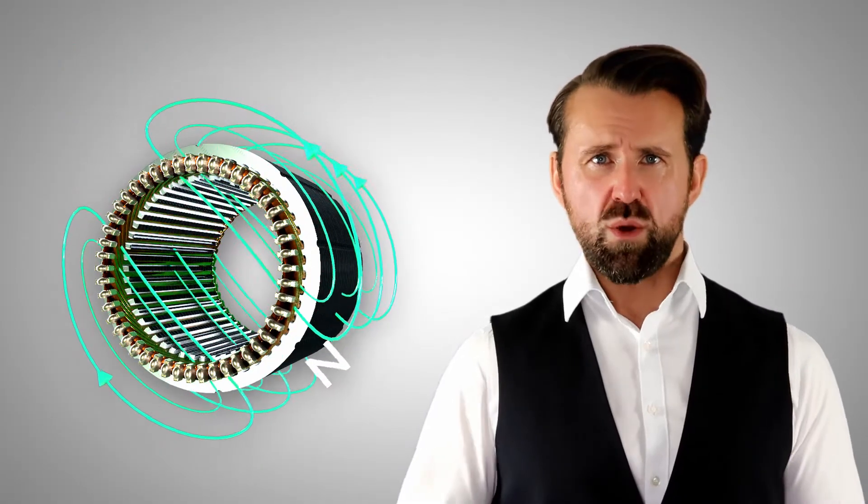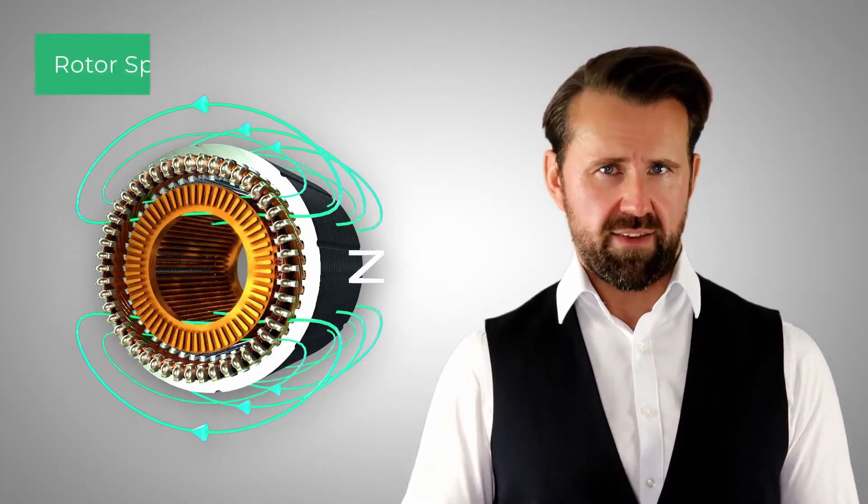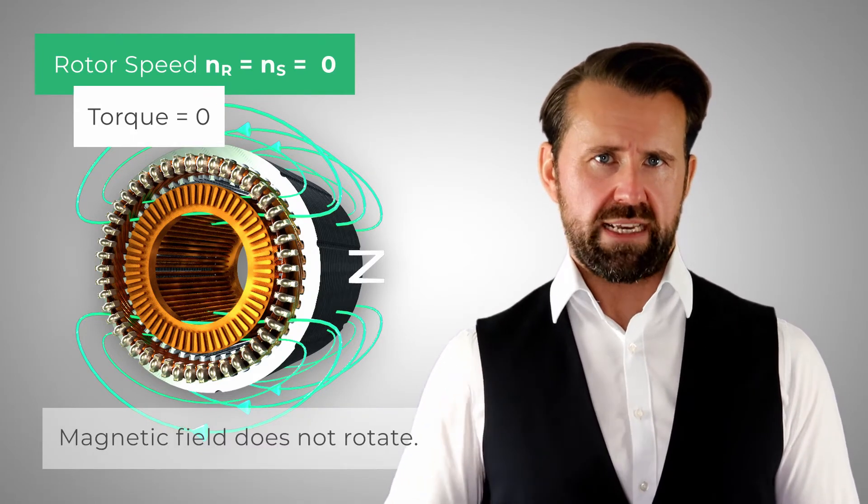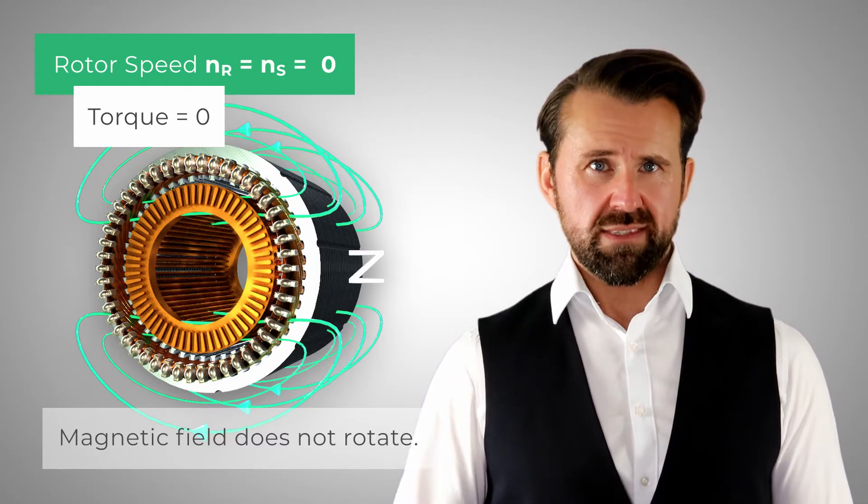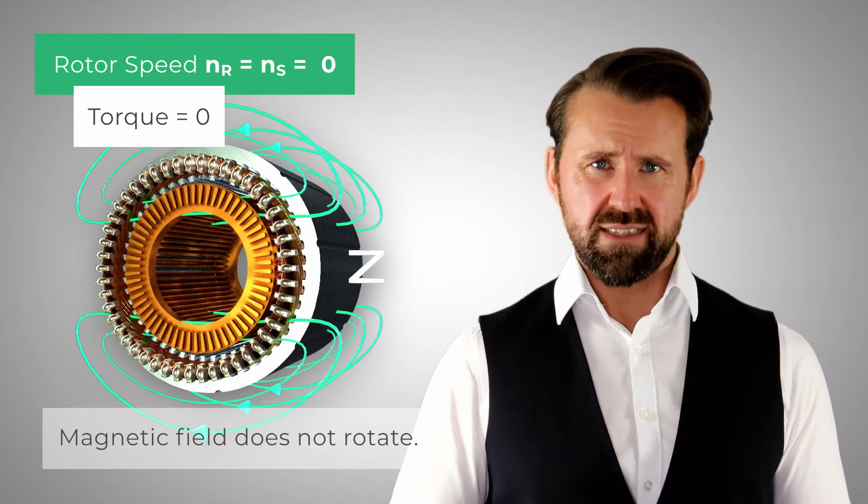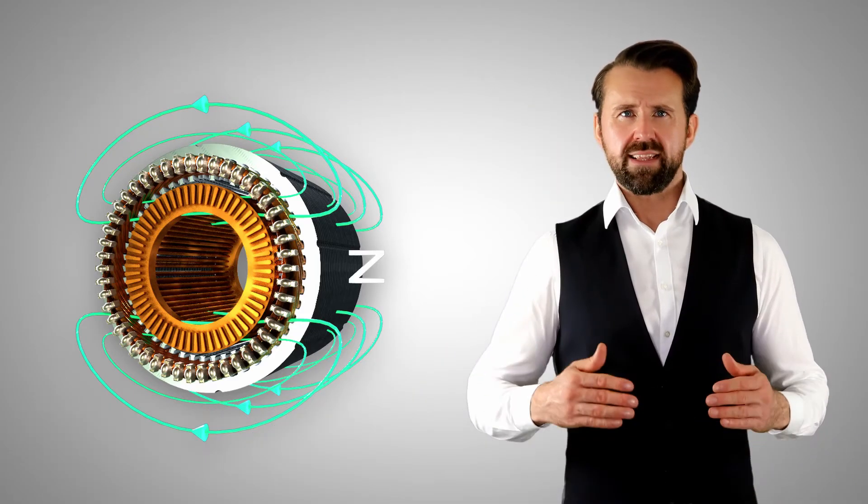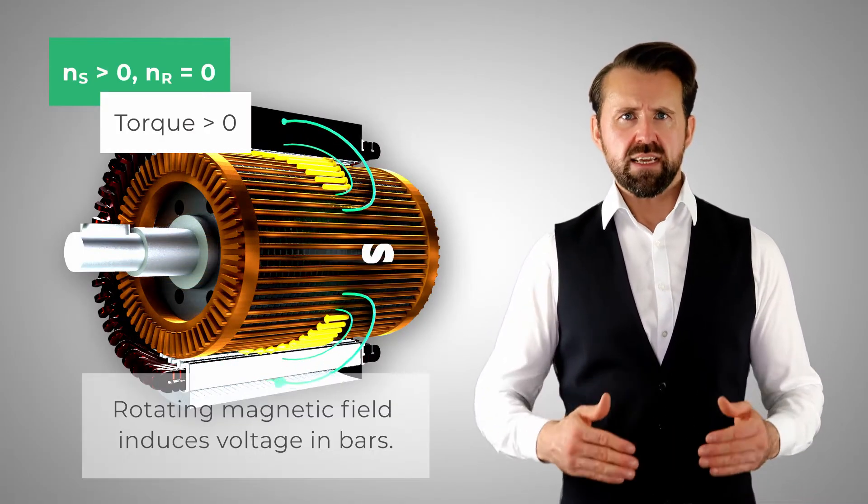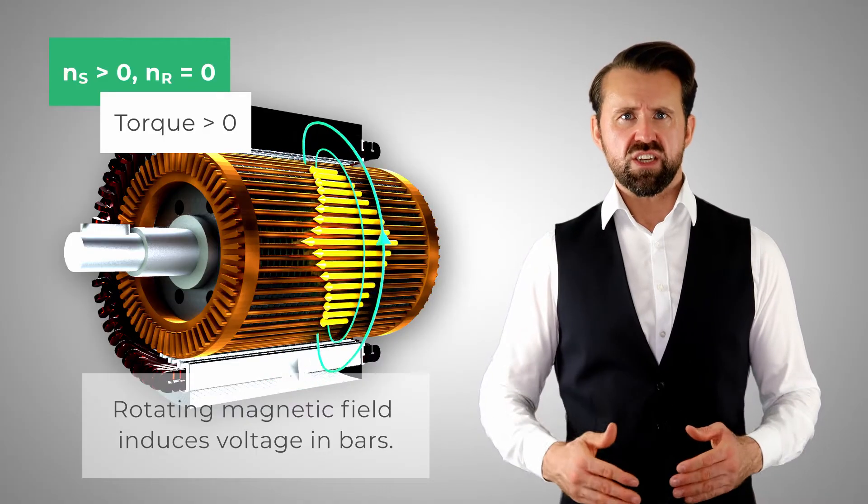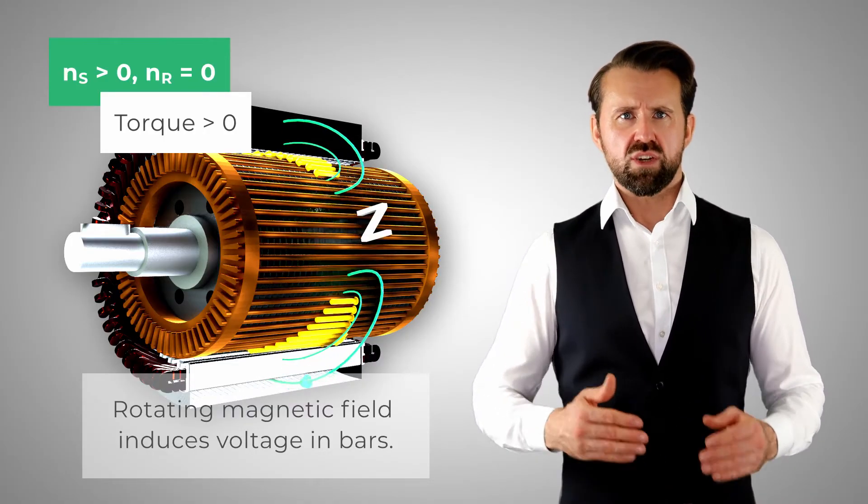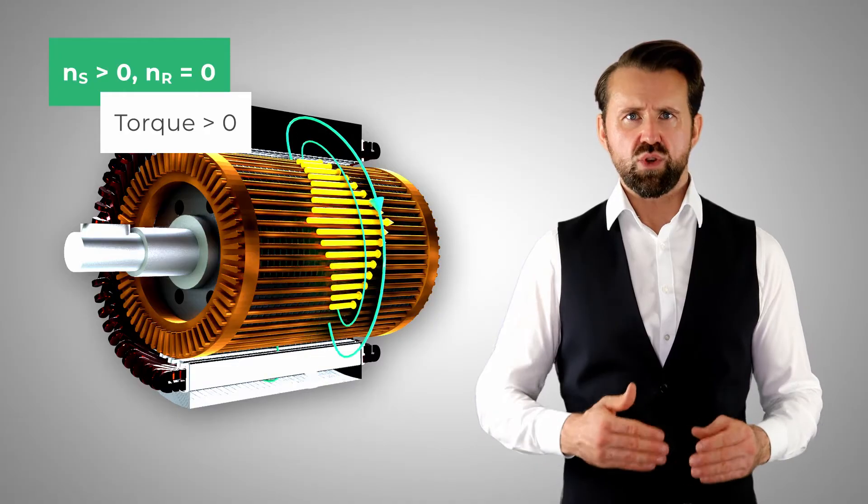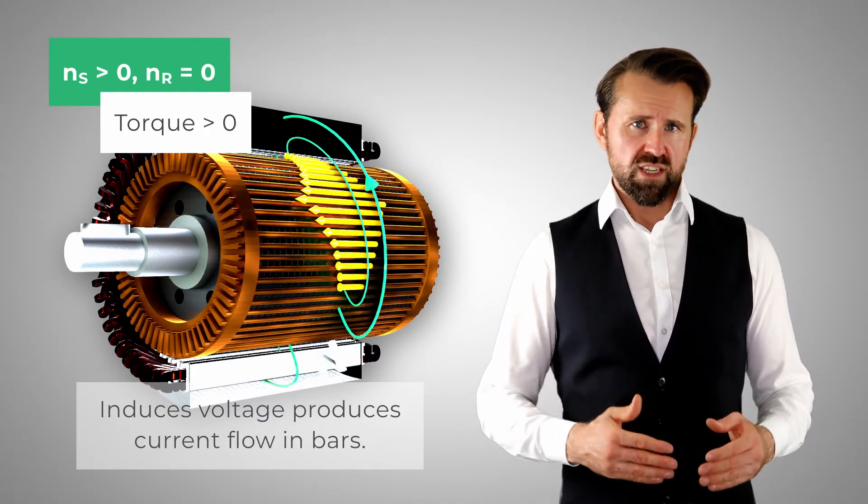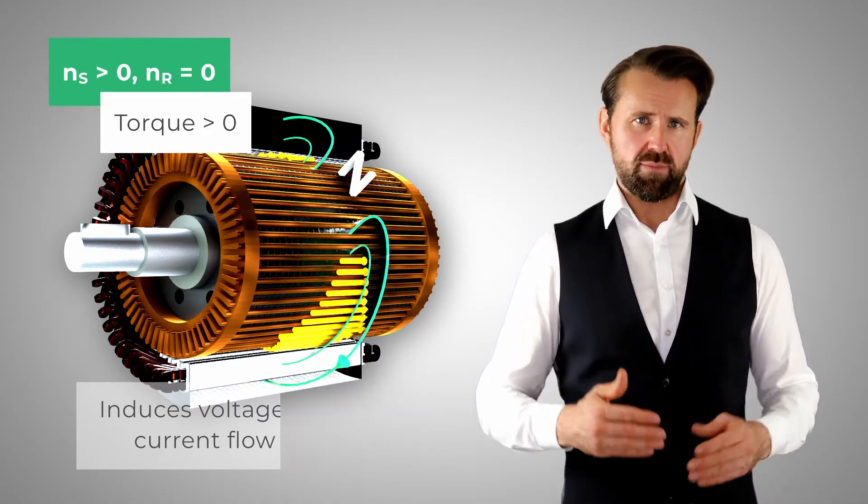At first, we stop only the rotation of the magnetic field and insert a cage of aluminum or copper into the magnetic field, with the result that the torque of the rotor is still zero. And now we let the magnetic field of the stator rotate, but we still hold the rotor. The rotating magnetic field induces a voltage in the bars. Because the conductor bars are short-circuited to each other at the lower and upper ends, the induced voltage produces a current flow in the bars.